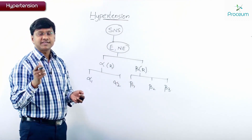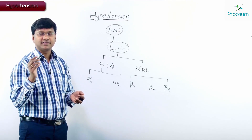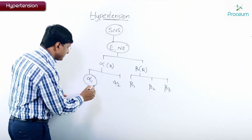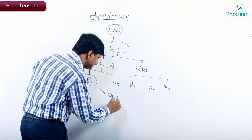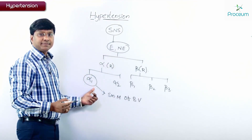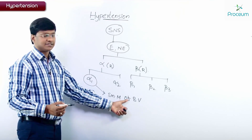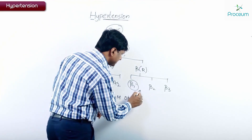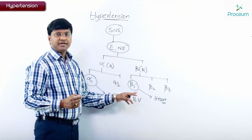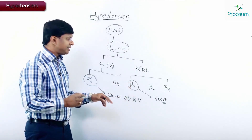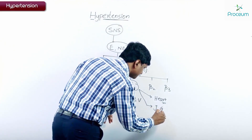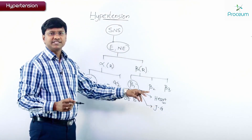The receptors concerned with regulating blood pressure are the alpha 1 receptors. Alpha 1 receptors are present on the smooth muscle of blood vessels. Beta 1 receptors are present in the heart, and they are also present in the JG apparatus.